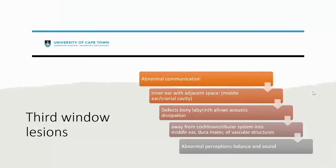A third window lesion specifically is that abnormal communication between your inner ear and an adjacent space — either the middle ear or the cranial cavity. Defects in the bony labyrinth allow acoustic dissipation, so you lose acoustic energy away from the regular cochlear vestibular system. Depending on where the third window is, energy can dissipate into the middle ear, the dura, or even vascular structures — creating abnormal perceptions of balance and sound, which is what patients complain of.